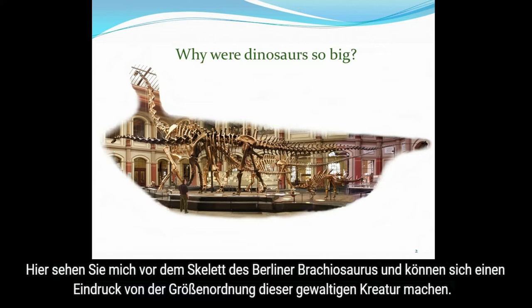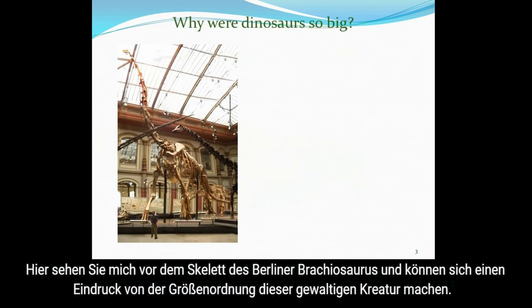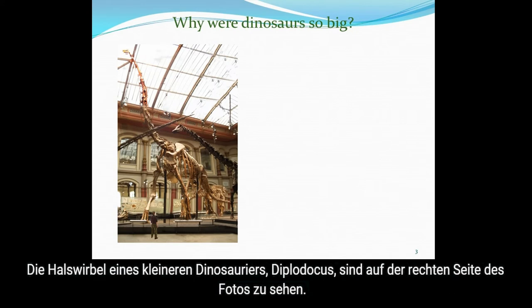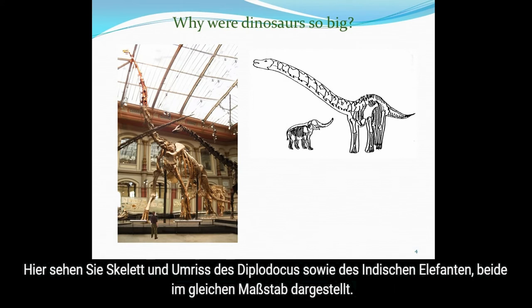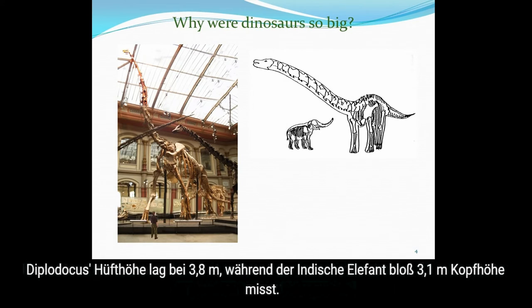Here's the Berlin Brachiosaurus. You can see me standing in front of its skeleton, and this gives an impression of the scale of this immense creature. The neck bones of a smaller dinosaur, Diplodocus, can also be seen on the right of the photograph. Here is the skeleton and outline of Diplodocus and the Indian elephant, both drawn to the same scale. Diplodocus stood 3.8 meters tall at their hips; the Indian elephant is only 3.1 meters head height.